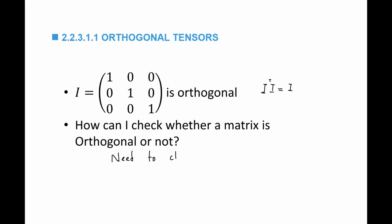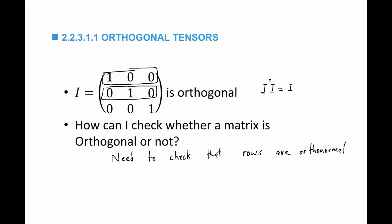To check whether a matrix is orthogonal, you have to verify that the rows are orthonormal: the length of each row as a vector must equal 1, and the dot product between each row vector and every other row vector must equal 0. If both conditions hold, then the matrix is orthogonal.